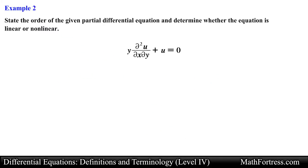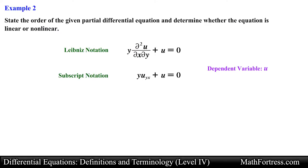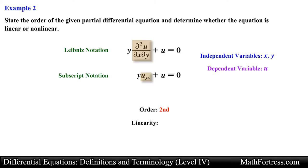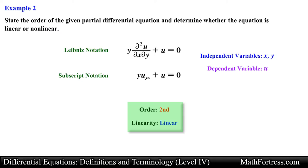Let's try the next example. This PDE is written in Leibniz notation. We can also rewrite it using subscript notation. Notice that we are taking the partial derivative of u with respect to y and then with respect to x, so the dependent variable is u and the independent variables are x and y. For the order, we have only one partial derivative and it is a second partial derivative, so this PDE is second order. Checking linearity: the partial derivative and dependent variable u are raised to the power of 1, and the product of the partial derivative is written in terms of the independent variable y. There are no transcendental functions, so all three criteria check out. This equation is a second order linear PDE.